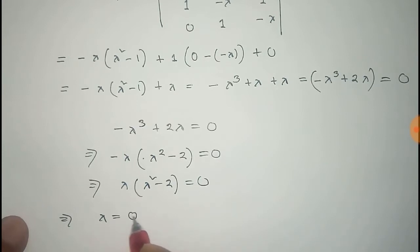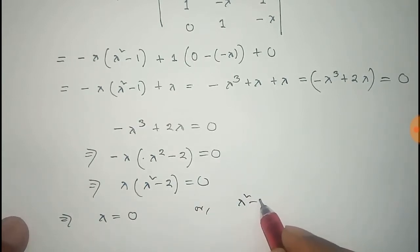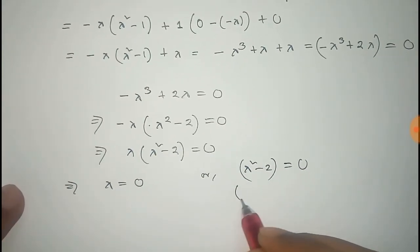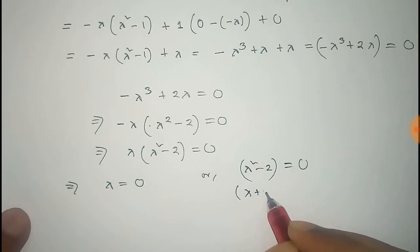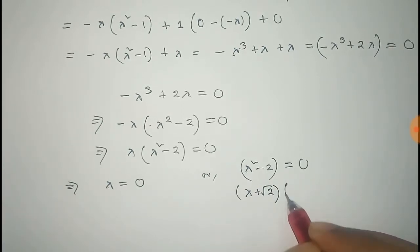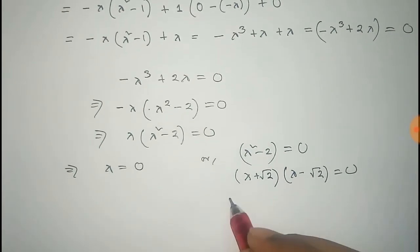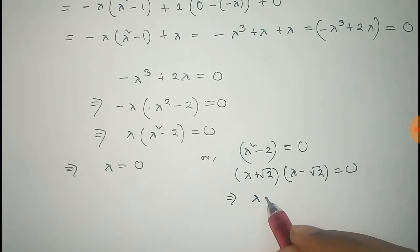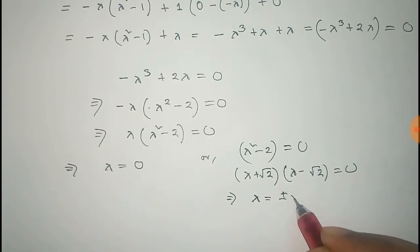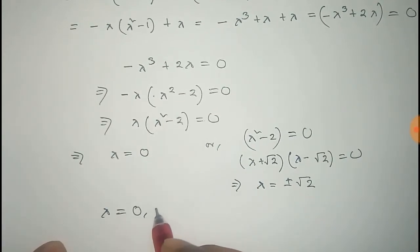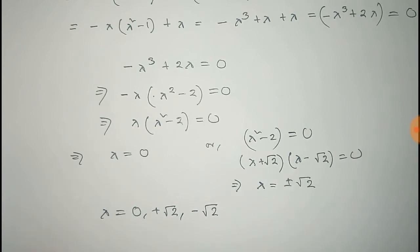From this, lambda equals 0 or lambda squared minus 2 equals 0. From lambda squared minus 2 equals 0, we factor it as (lambda plus root 2)(lambda minus root 2) equals 0, giving lambda equals plus or minus root 2. Thus, all total we get three eigenvalues: 0, plus root 2, and minus root 2. These three are the eigenvalues of the given matrix A.